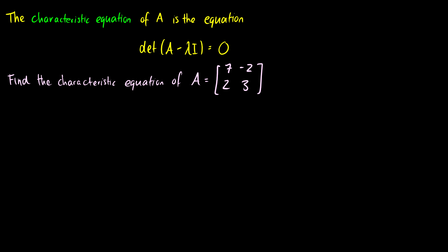So if we have a matrix A equals [[7, 2], [-2, 3]], and we find the determinant of A minus lambda I equals 0, we're going to get an equation from it. So we want the determinant of A minus lambda I, which gives us the matrix with entries 7 minus lambda, negative 2, 2, and 3 minus lambda.